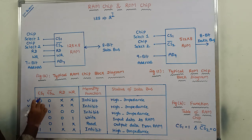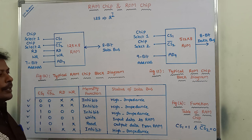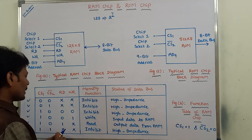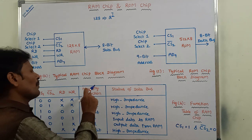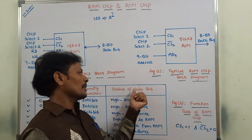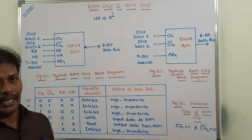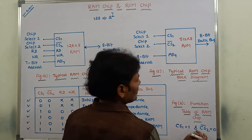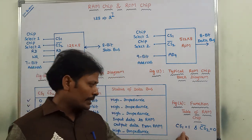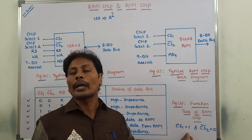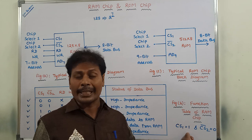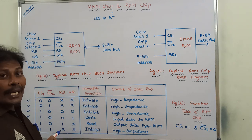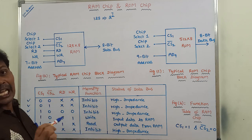In the last case, CS1 is equal to 1 and CS2 bar is equal to 1. In this case, the RAM chip is not in operation mode; read and write inputs are not enabled, and the memory is in an inhibited state. The data bus is in a high impedance state. The RAM chip can be in operation mode only when CS1 is equal to 1 and CS2 bar is equal to 0. At that time, we perform either read or write operation by enabling the corresponding input. This is the function table of the RAM chip.